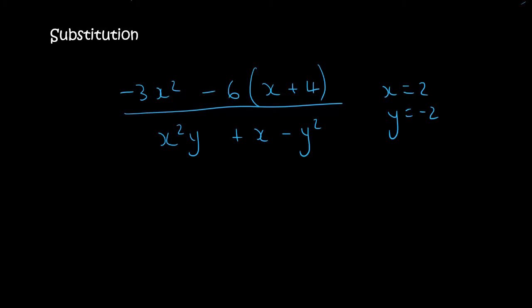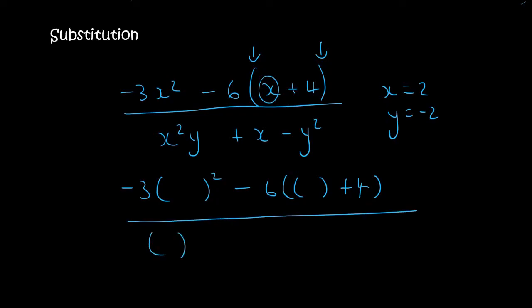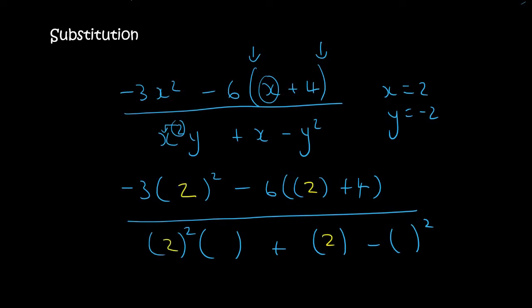So here's the last one. x is 2 and y is minus 2. You just rewrite everything, and wherever you see an x or y, you just put a bracket. Notice that this bracket is already there, and then for the x I need another bracket on the inside. Plus 4, then I've got a bracket here. The bracket is just for the x. Then I've got a bracket for the y, another bracket, and another bracket squared. Now I fill in 2 in place of x — so that was there, there, and there — and then minus 2 for the y, which is this one and this one.